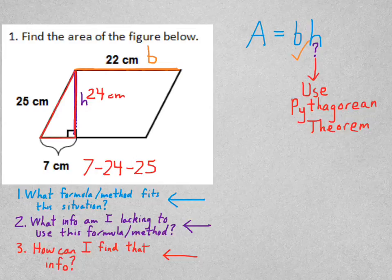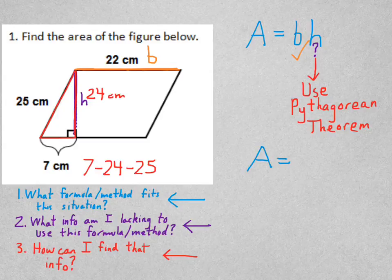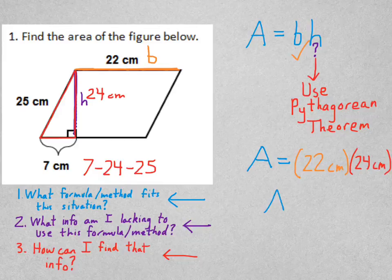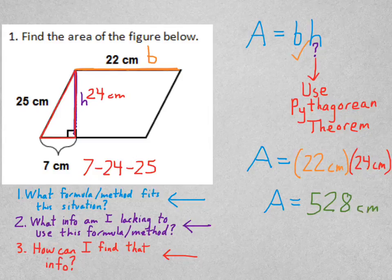Now that I know that, now I can just plug in the formula. Now it's just a basic area problem. So area is equal to 22 for the base, 24 for the height. Multiply those, I get area equals 528. The units would be centimeters times centimeters, which is centimeters squared. Hey, not too bad.